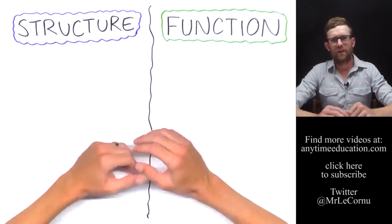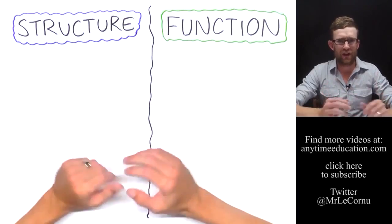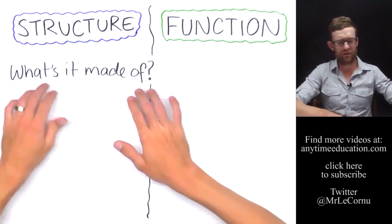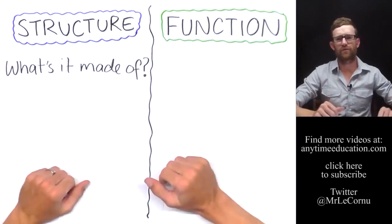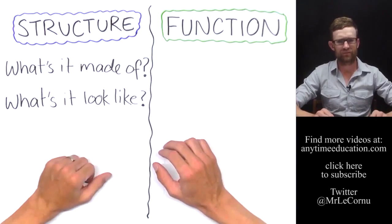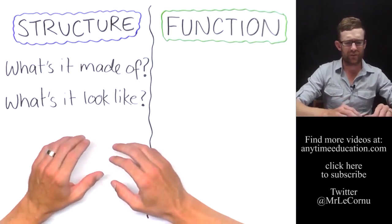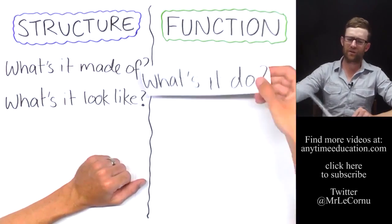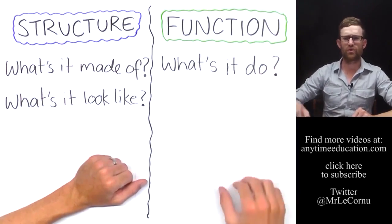So first of all, let's look at structure. If you're asked about the structure of something, then we're talking about what's it made of or what does it look like. If you're asked about the function of something, then we're talking about well what's it do, what is its job.